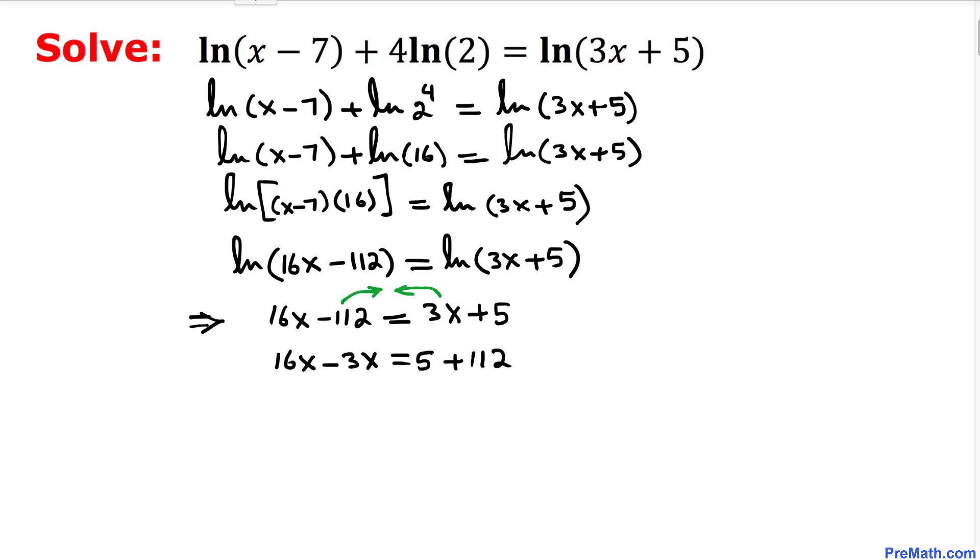We ended up with 16x minus 3x equal to 5 plus 112, or this could be written as 13x equal to 117, or x is simply equal to 9 as our solution.